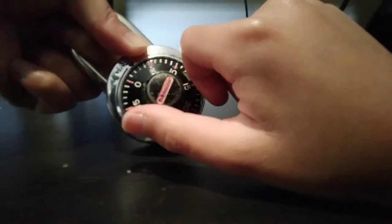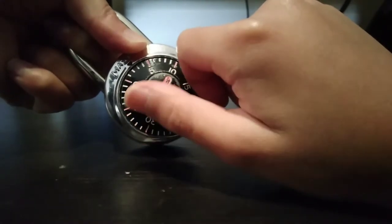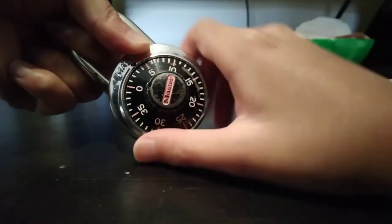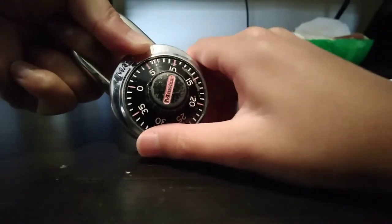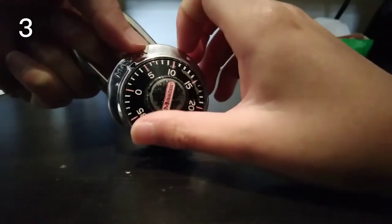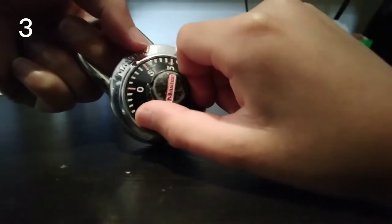As you can see, my lock is getting stuck between 2.5 and 3.5, so the middle number is 3 and I will write that down. Then you let go a little, move it over.